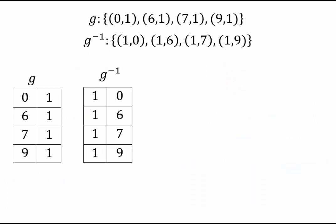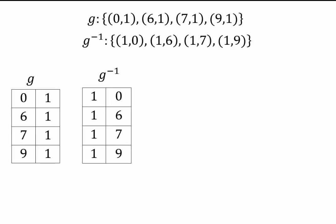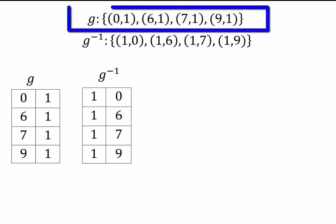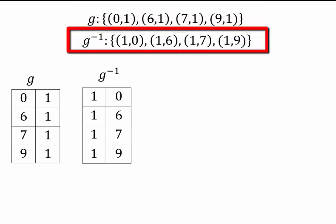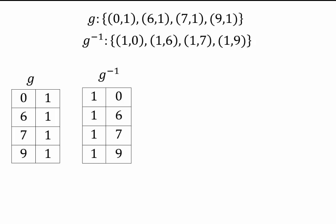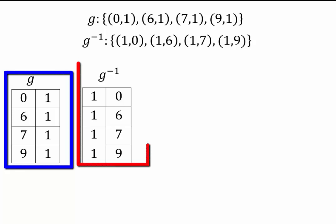This is a good opportunity to review writing relations in all the different representations. So in the set notation we'll write g with curly brackets and separate it with ordered pairs: (0,1), (6,1), (7,1), (9,1). And then the inverse relation would be similar pairs except the input output are reversed. So it would be (1,0) instead of (0,1) and (1,6) instead of (6,1) and so on. We can also write them in tabular notation. So we would have our first column to be the input for g: 0, 6, 7, 9 and the output would be 1 because all the outputs were 1 for g. And in the g inverse we would have to switch the columns.